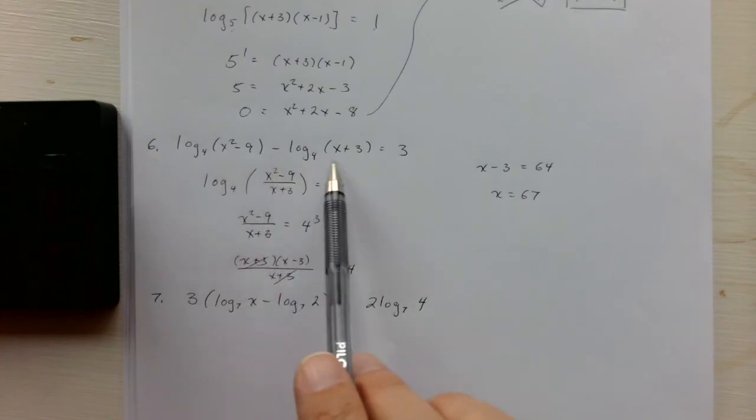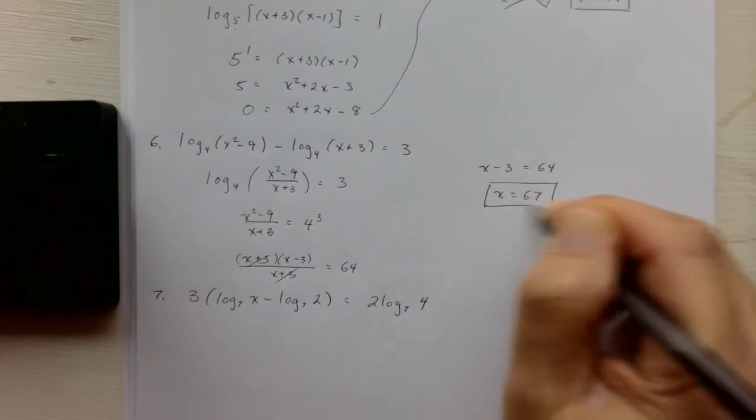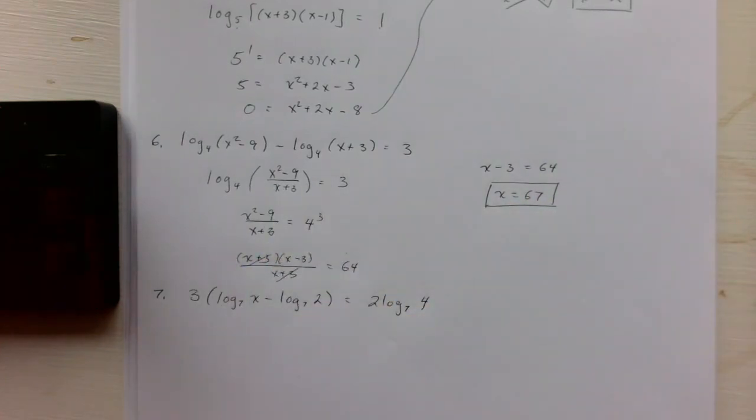If we plug 67 in here, it should work out okay. You're not taking the log of a negative number. So that's our solution.